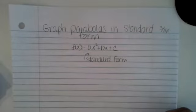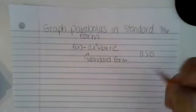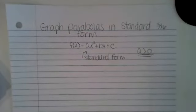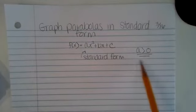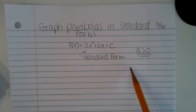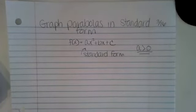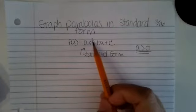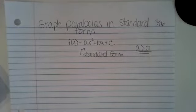Along with a quadratic function in standard form, one of the things we have to keep in mind is that a is greater than zero — this is really, really important. When we were talking about factoring in our last unit, we wanted a to be one or larger, which is the same idea. We just can't have a equal zero. Remember, when looking at quadratics in standard form, we're looking for something with a power of two — the largest power is two, something is being squared.